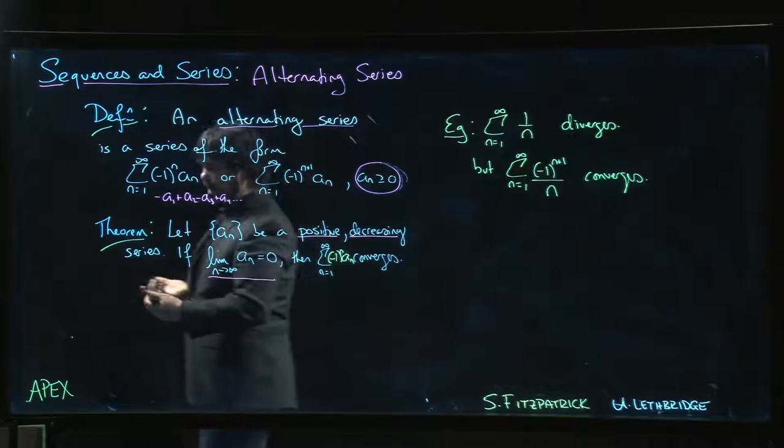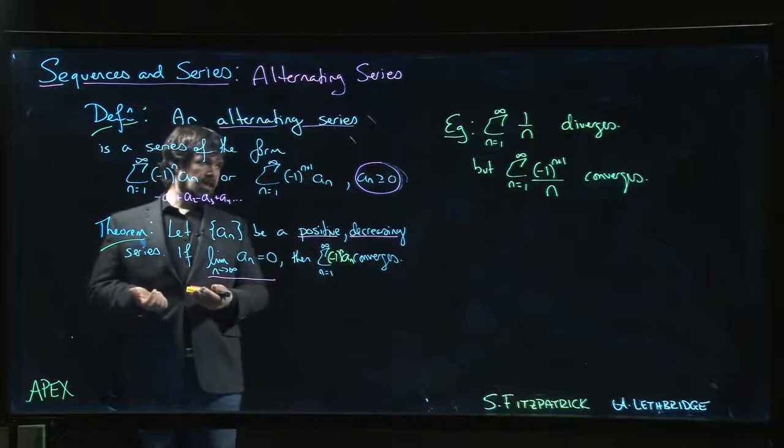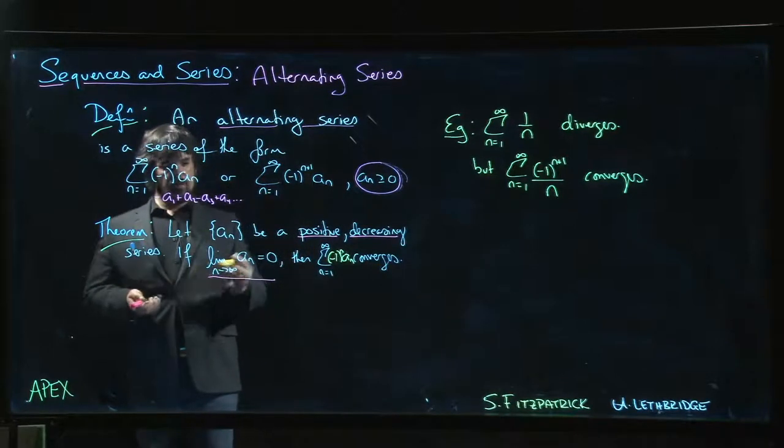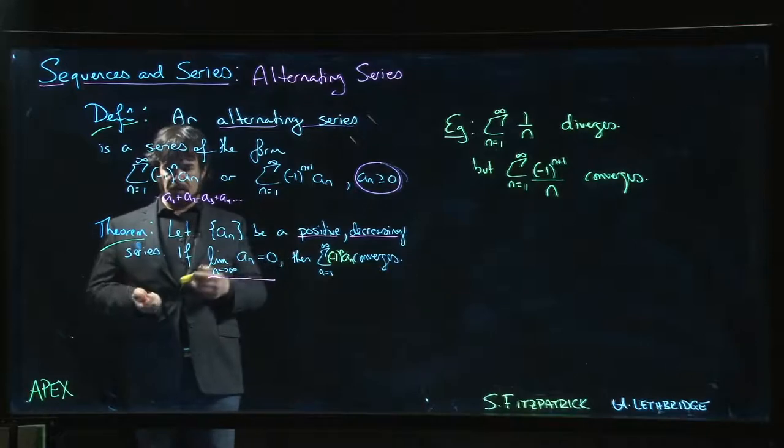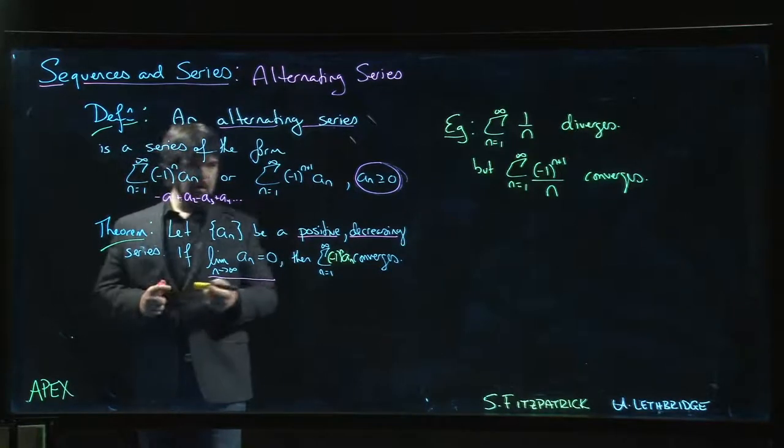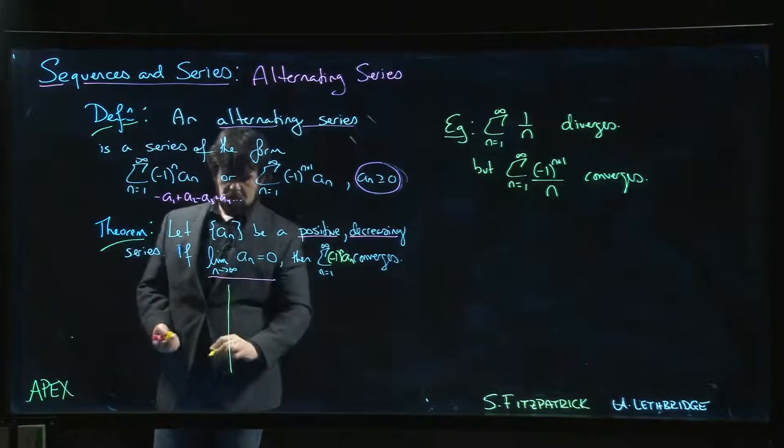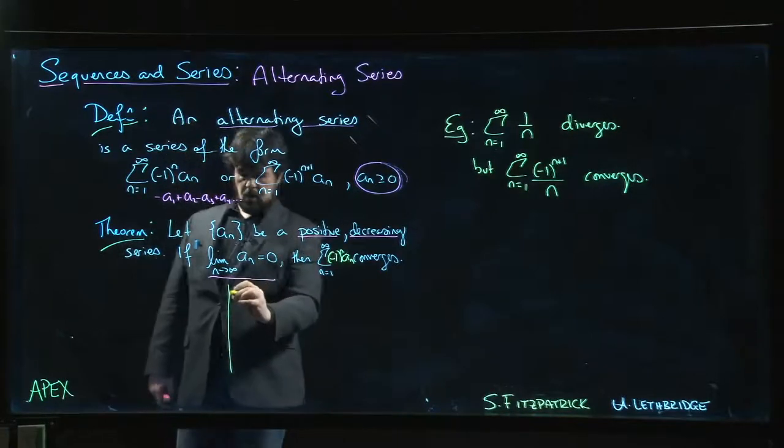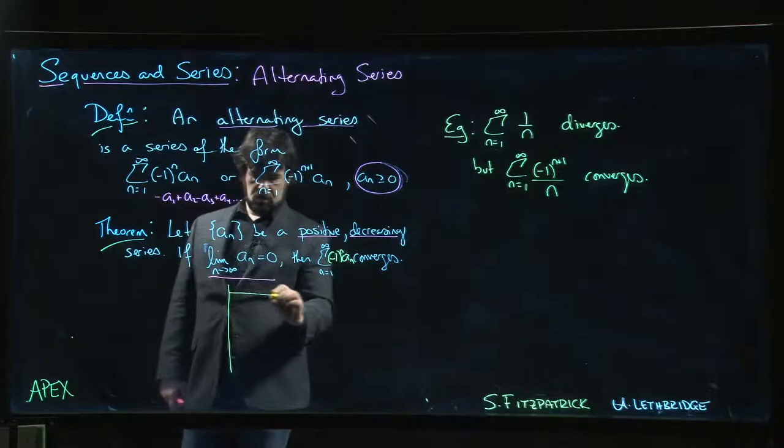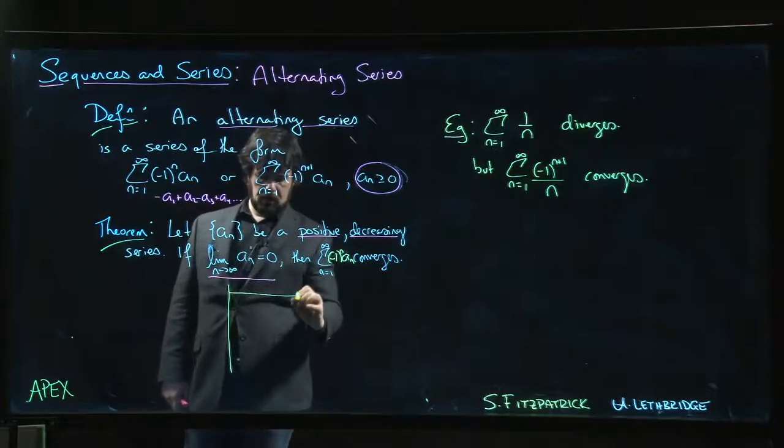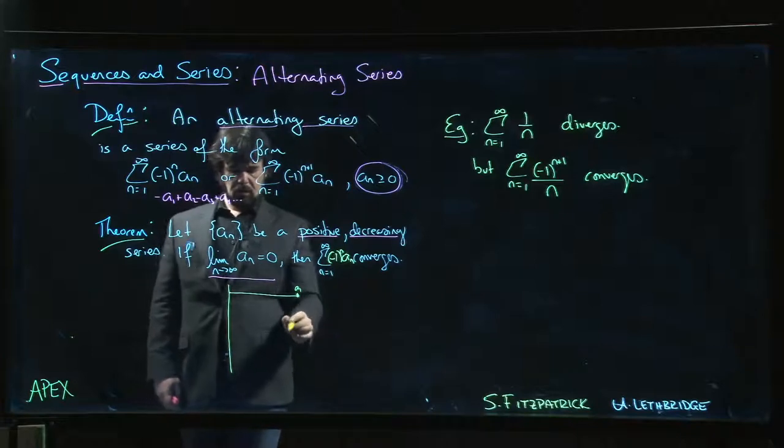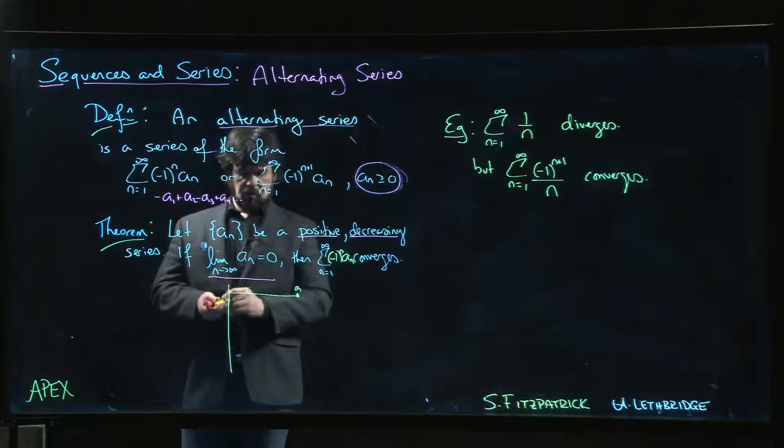Which is kind of interesting. The idea is that if you're looking at the partial sums, you start with, let's say, a_1 is positive. So you start—here's zero—and you add a_1, so you're out here. Here's a_1. Now you subtract a_2.